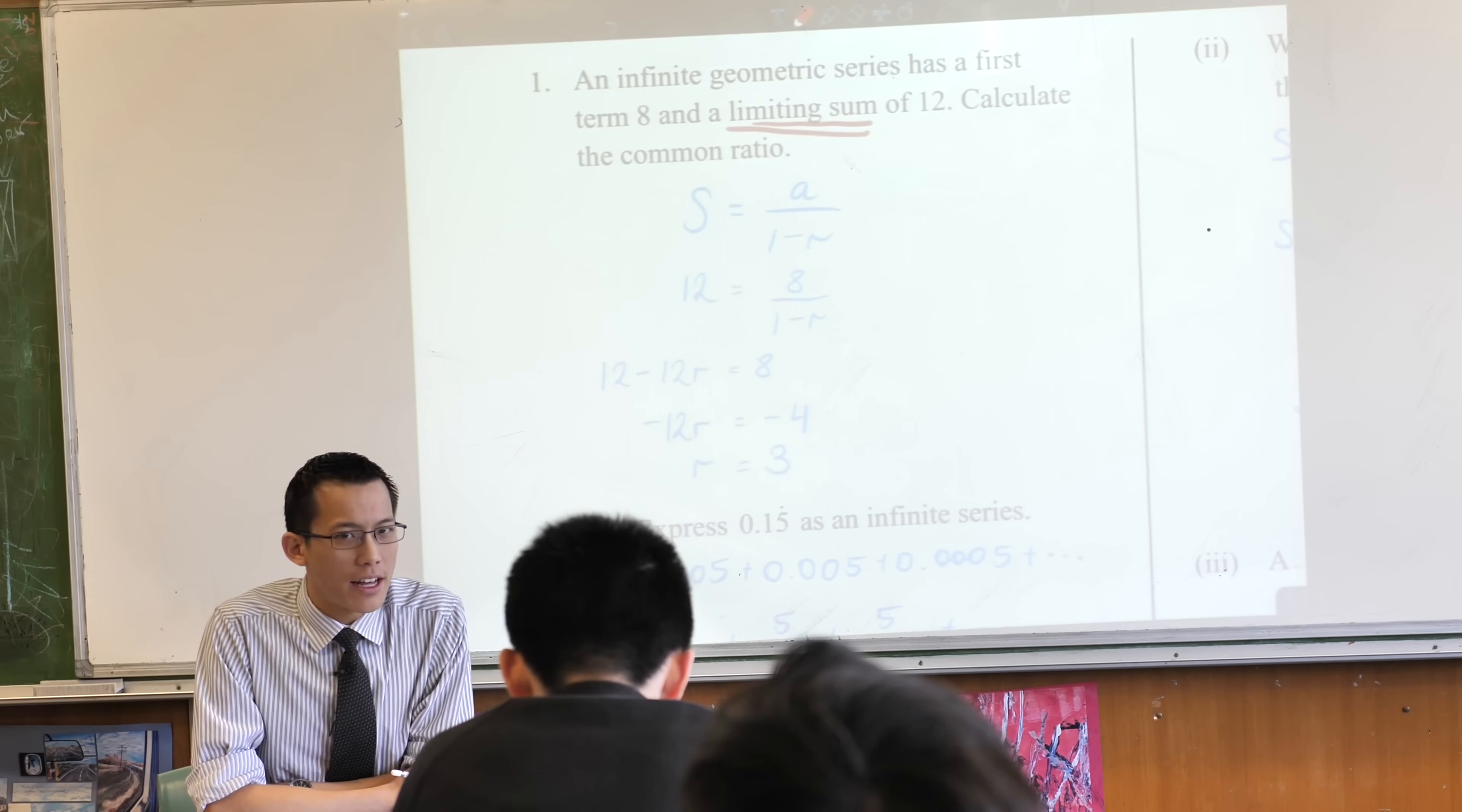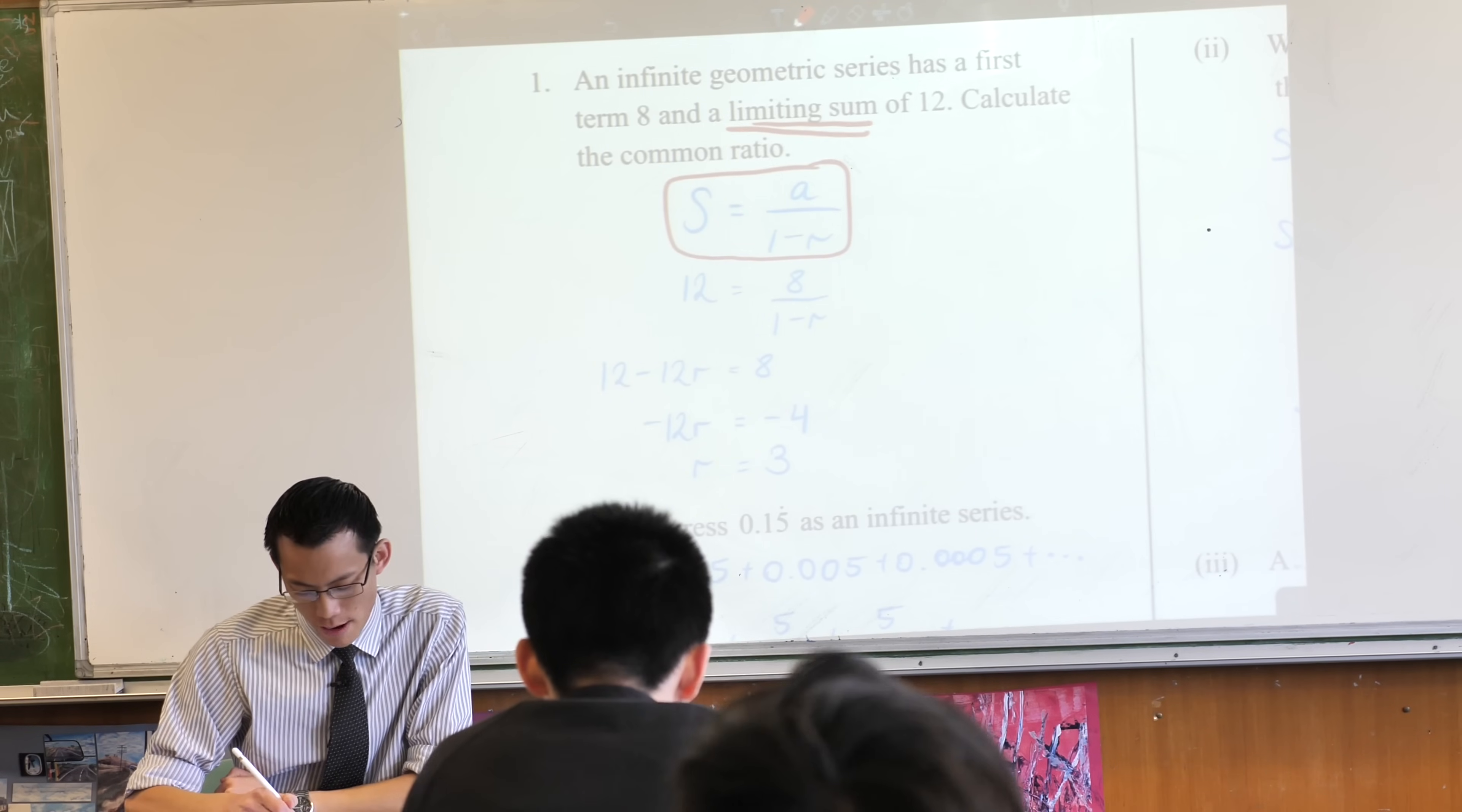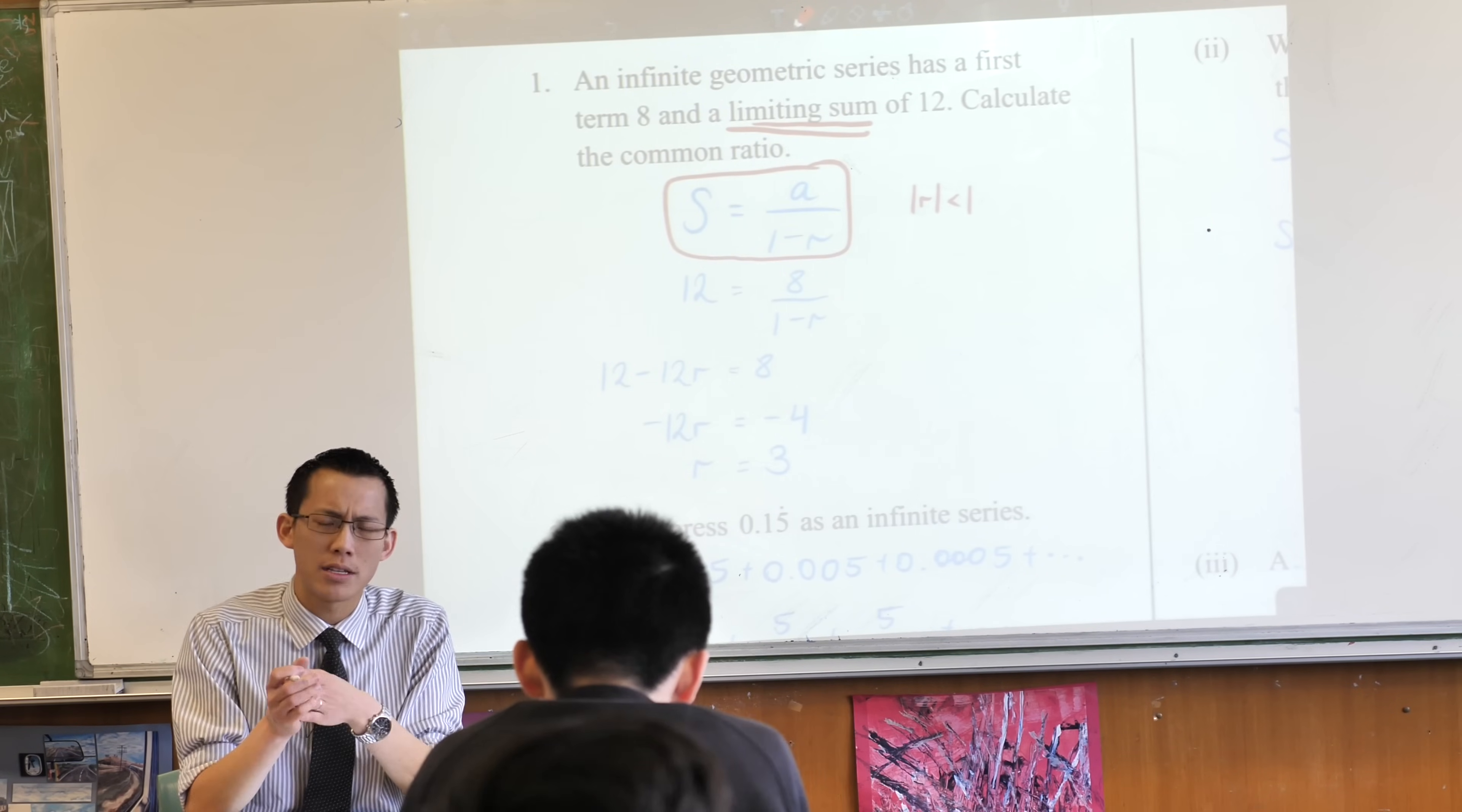we're having a look at a GP. They do tell you that this GP has a limiting sum. There you go, right there. So unlike in other questions where I've said to you, if you're going to quote this, it's important that you qualify that statement, like why is this formula relevant? Well it's only relevant in this case here, right? If that ratio doesn't lie between, if the absolute value of that ratio isn't less than 1, then you can't use the limiting sum formula.